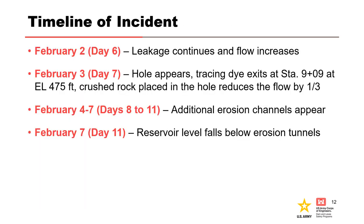Leakage continued to increase, and flow was measured at 18 CFS. The discharge point at Station 9+09 climbed to elevation 478, and exploratory drilling from the crest began. On the next day, a hole appeared on the upstream face of the embankment at Station 2+12 at elevation 485. Tracing dye exited the downstream face at Station 9+09 at elevation 475, approximately 13 minutes later. Crushed rock was placed in the hole, reducing the flow by one-third.